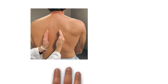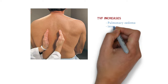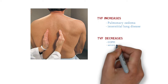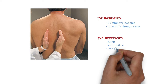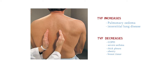Tactile vocal fremitus is performed by placing the ulnar edges or flat of your hands on the chest and asking the patient to say '999' or '111.' The vibrations are transmitted through the lung substance and felt by your hand. Always compare right and left sides. Tactile vocal fremitus increases in solid parenchyma such as pulmonary edema and interstitial lung diseases, and decreases in COPD, severe asthma, thickened chest wall, obesity, or pleural effusion.